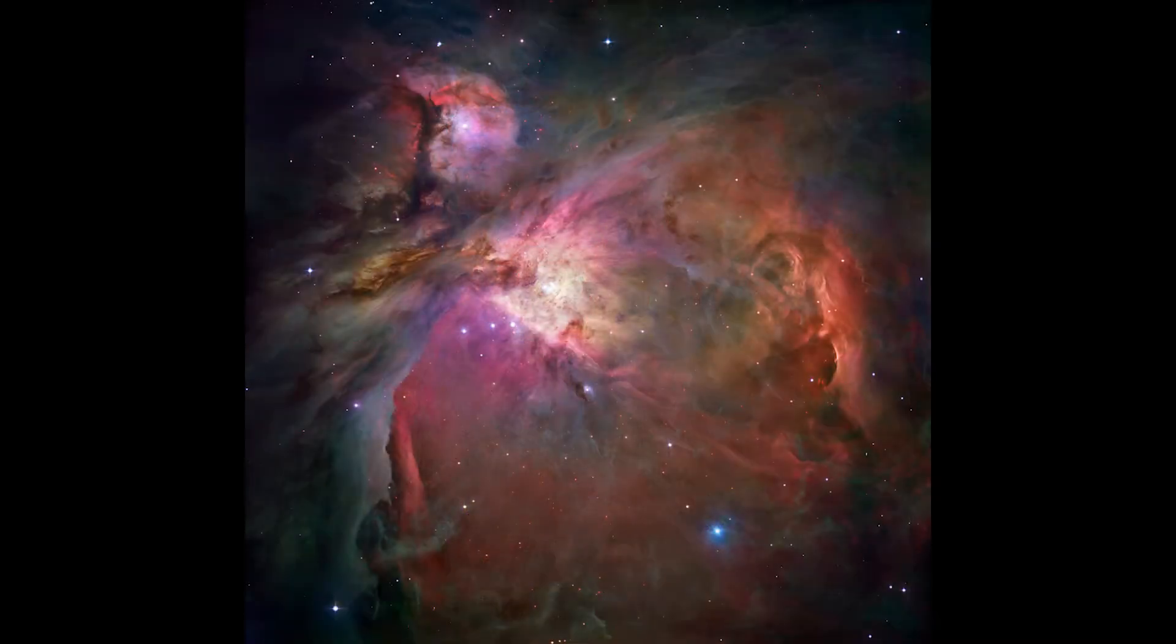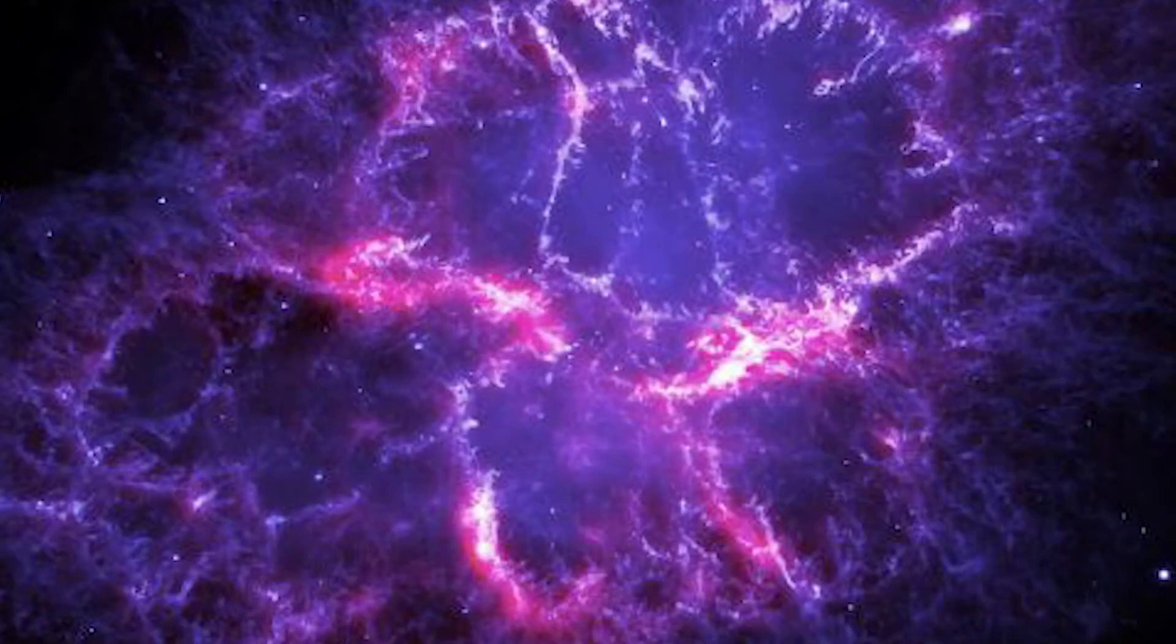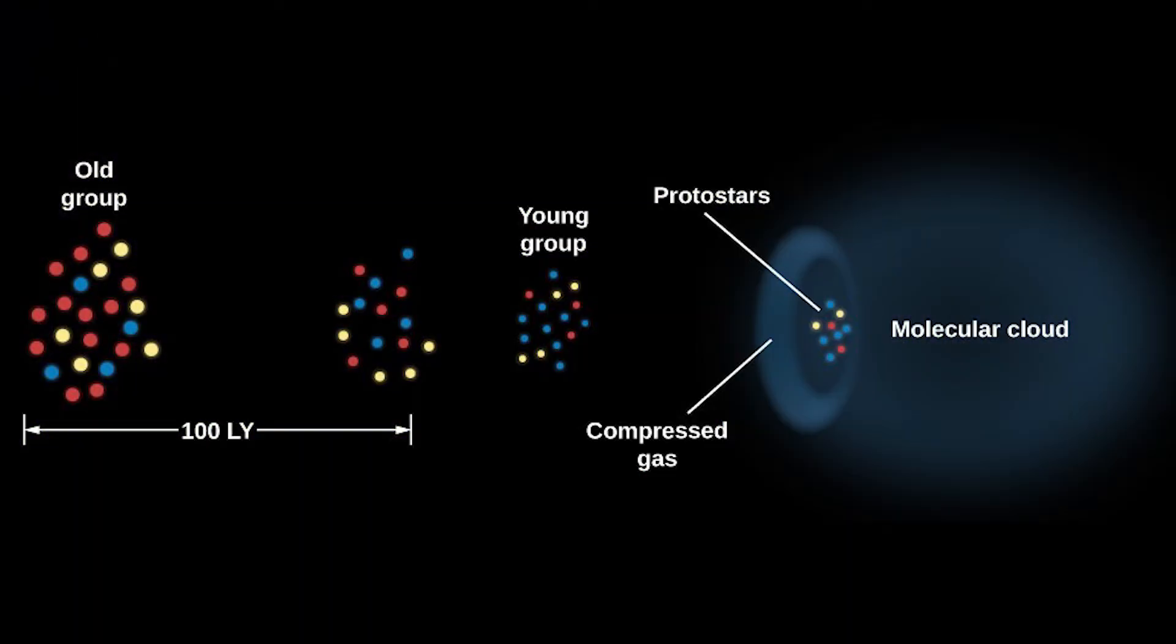These clouds that consist of gas and dust are known as the nebula. The dominant gases are hydrogen and helium. The dust and gases in a nebula are spread out, but gravity slowly begins to pull together the clumps of dust and gas.